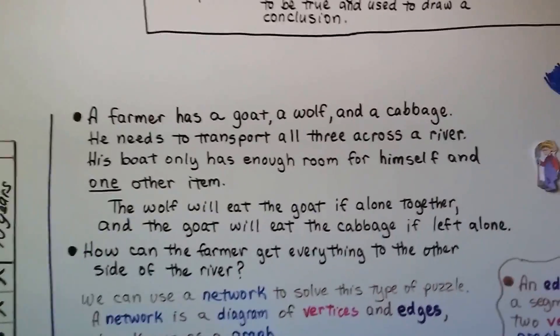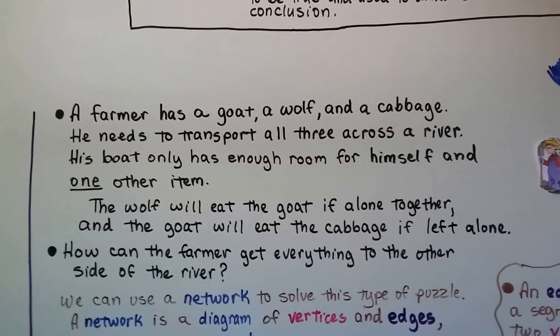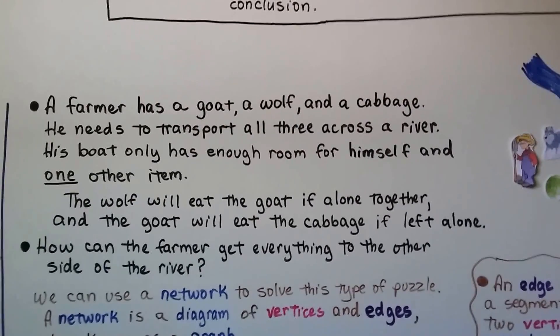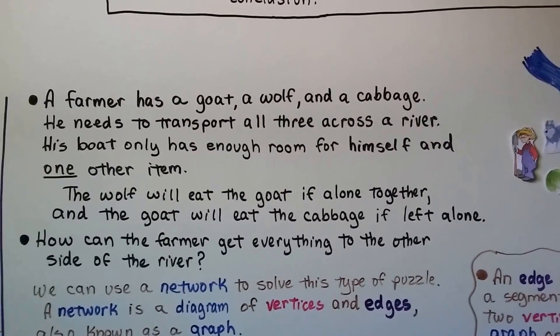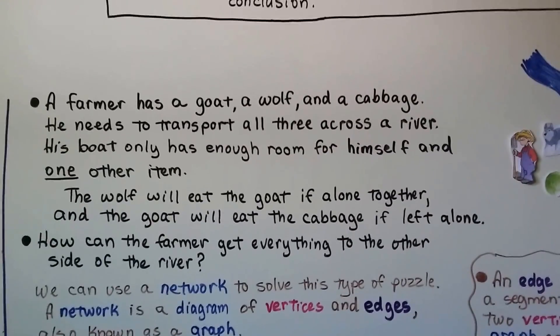This one's kind of famous, and you may have heard this one before. It's usually told with a farmer and a chicken and a wolf and some corn. This one is a farmer has a goat, a wolf, and a cabbage, so it's basically the same thing.